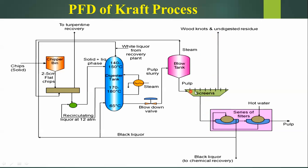From the screen, the pulp is sent to a series of filters. Inside the filters, the pulp is filtered to separate the black liquor for the chemical recovery plant. The black liquor is separated from the pulp; from that black liquor, sodium hydroxide, sodium sulphate, and sodium carbonate are recovered. The black liquor is also recycled back to the digester to maintain temperature. Hot water is added to the second filter for better filtration.